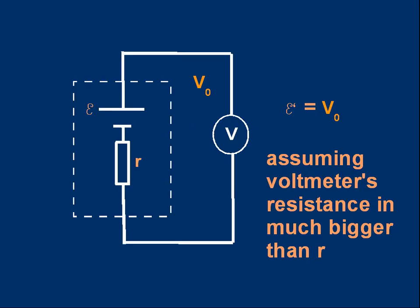To get the EMF is easy. We just connect the voltmeter directly to the terminals of the cell. The voltmeter reading, let's call it V subscript nought, V nought. I'll be using V by itself later for something else. The EMF is equal to V nought, assuming that the voltmeter's resistance is much bigger than R. If the voltmeter's resistance isn't big enough, then a significant current flows around the circuit. That means there's some lost volts across the internal resistor, and our value of V nought is a little bit smaller than the true EMF.